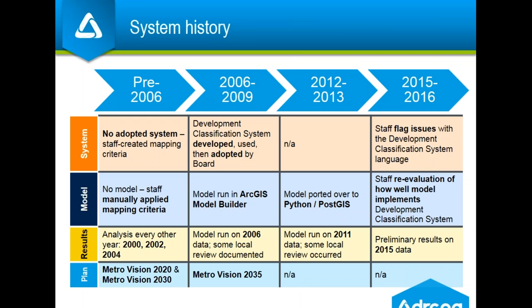DRCOG staff built the development type model — a computer model — to help implement the system. You'll hear me refer to it as 'dev type' for shorthand. Unlike some of our other community computer modeling work here at DRCOG, this model just makes observations about today; it makes no forecasts into the future. Before 2006 there was no system and no model — it was just a process of heads-up digitization coinciding with new aerial imagery every other year, which was laborious and prone to human error.